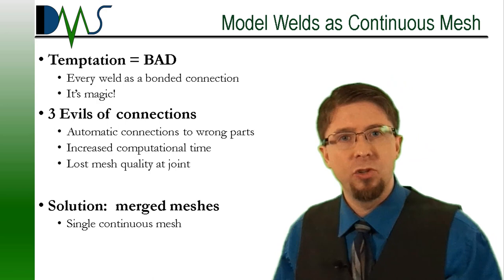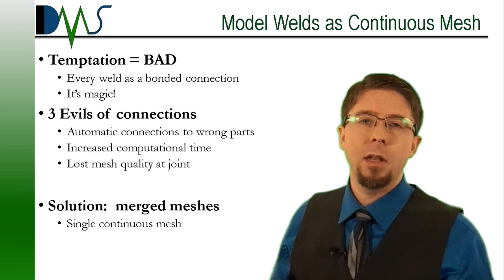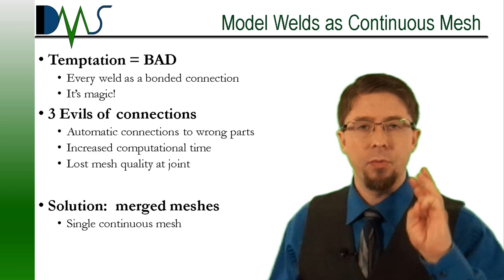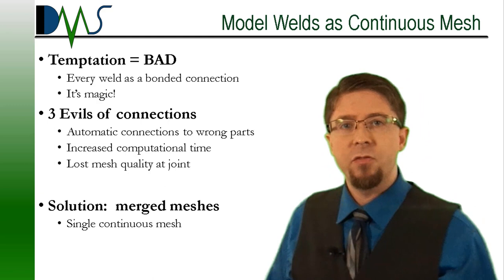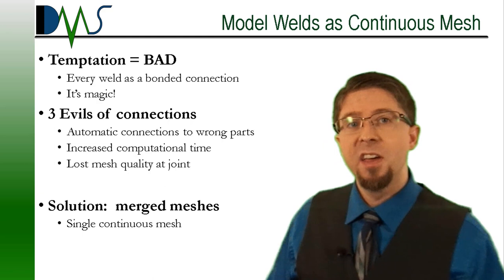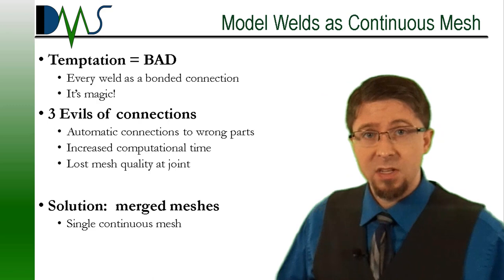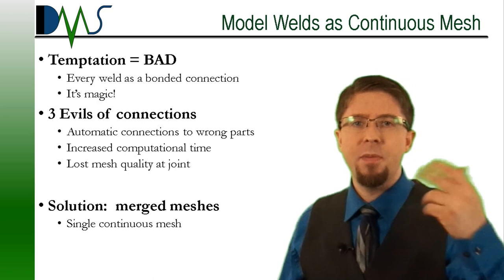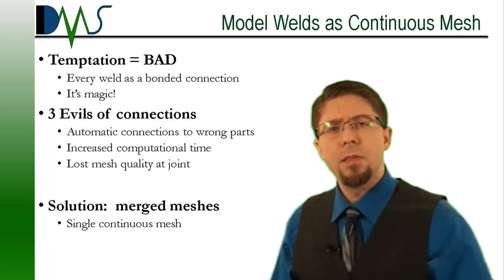Model your welds as a continuous mesh. The temptation is to model welded joints as a bonded connection — software developers advertise this as a magic solution where you simply place parts together and let the software automatically create connections. Don't do it. Automatic bonded connections hurt you on three fronts. First, ship structures are too dense in connections for software to reliably detect them automatically. Every time this is attempted, the software creates about 80% of connections correctly, but 20% are erroneous connections stretching across the model, completely misrepresenting the stiffness of the structure — like assuming a crane top links directly to the deck plate, ignoring the pedestal in the middle.